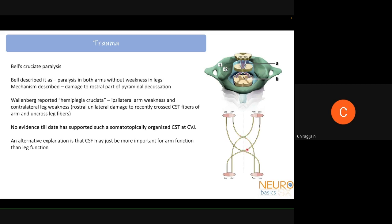Wallenberg then reported hemiplegia cruciata — ipsilateral weakness of the arm and contralateral leg weakness — described as a lesion where the leg fibers have not yet crossed but the arm fibers have. However, to date there is no evidence to support such an organized somatotopic corticospinal tract organization. Another explanation is that the corticospinal tract may simply be more important for arm function than for leg function.